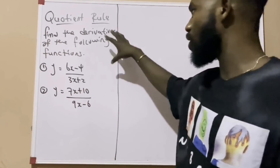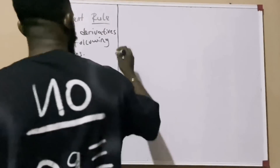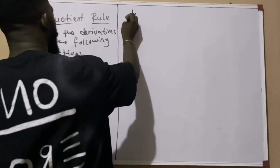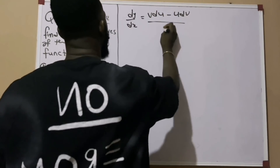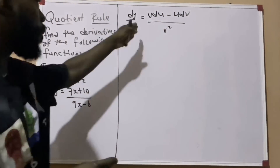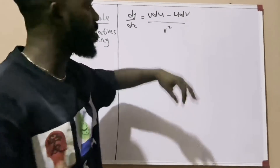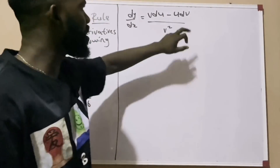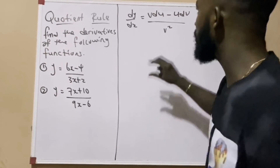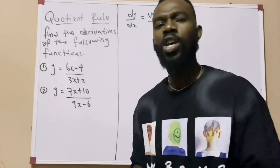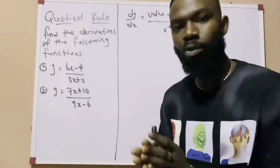For you to be able to solve differentiation problems using the quotient rule, you need to understand the formula. The quotient rule formula says: dy/dx equals v·du minus u·dv, all over v squared. This is the formula you apply when solving quotient rule problems. Don't forget: v·du means v is held constant while you differentiate u, and u·dv means u is held constant while you differentiate v.